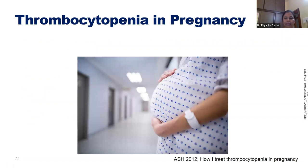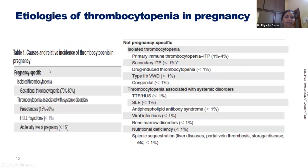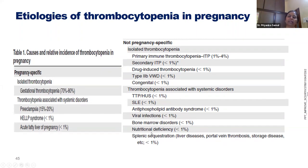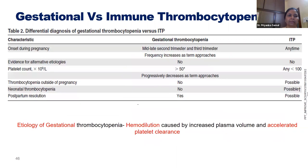Thrombocytopenia in pregnancy — causes and relative incidence: gestational thrombocytopenia is the most common cause at 70–80%. Thrombocytopenia associated with systemic disorders includes preeclampsia, HELLP, and acute fatty liver of pregnancy. Non-pregnancy-specific causes include ITP, secondary ITP, drug-induced thrombocytopenia, type 2B von Willebrand disease, and congenital thrombocytopenia. Other systemic associations include TTP, SLE, APLA, viral infections, bone marrow disorders, B12 deficiency, and splenic sequestration in chronic liver disease.